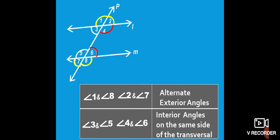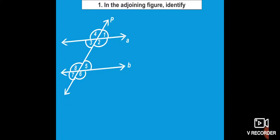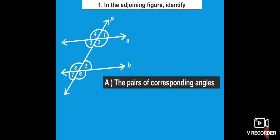You should watch the video again and again so you can understand the names very clearly. Now one question: in the adjoining figure, identify the angles. Here you can see line A, line B, and P is the transversal, with angles 1, 2, 3, 4, 5, 6, 7, and 8. Question A: the pairs of corresponding angles.